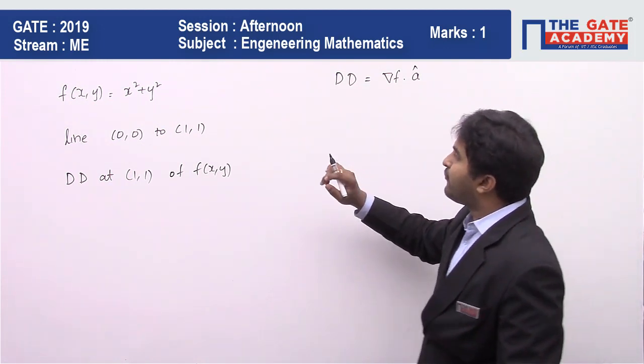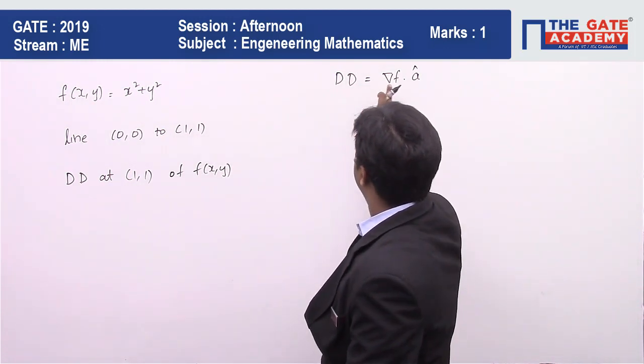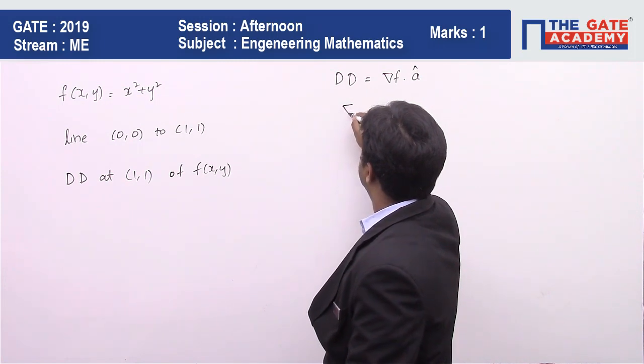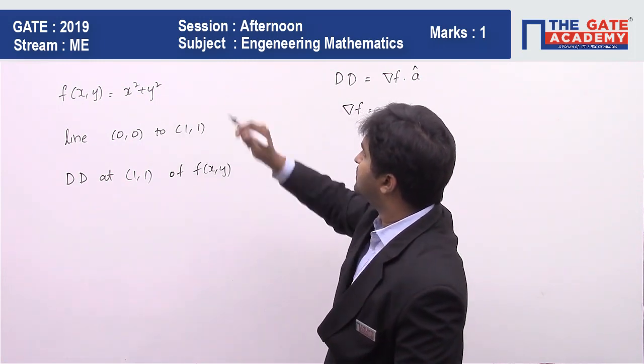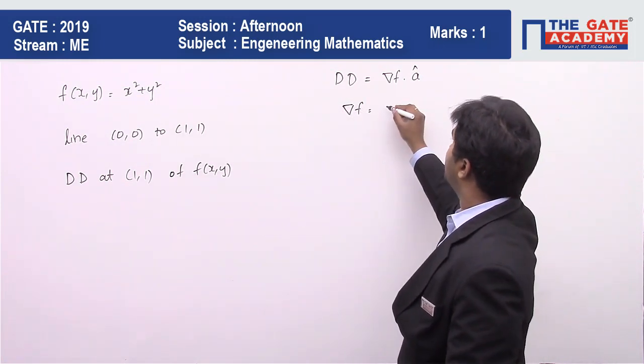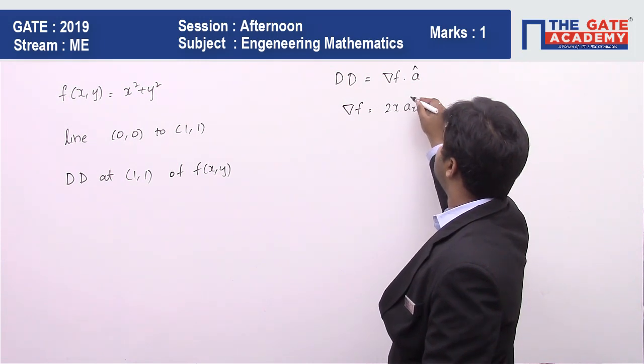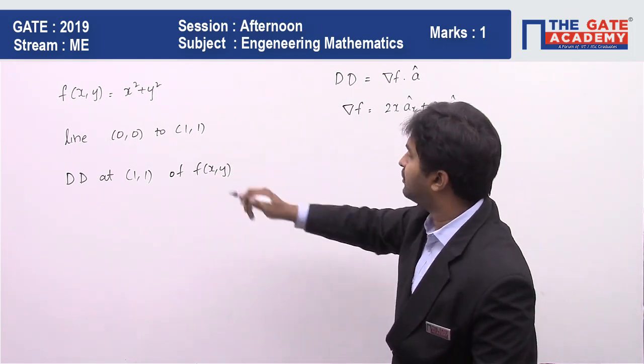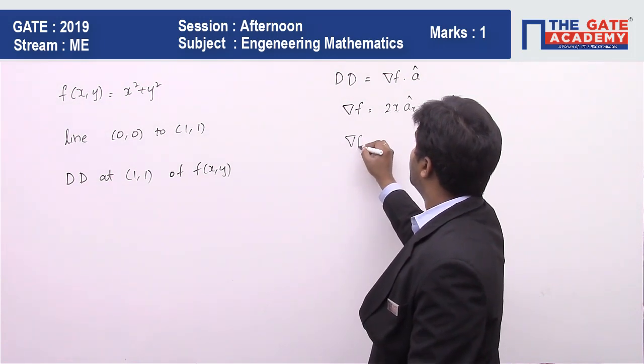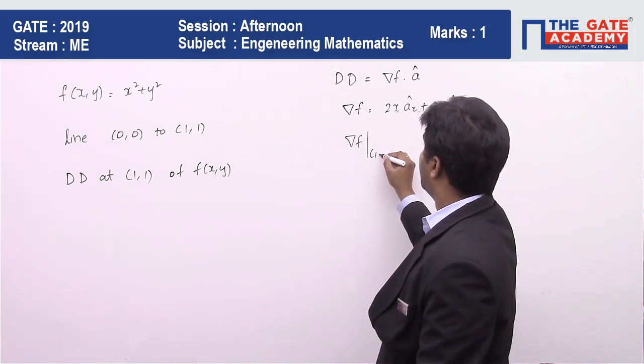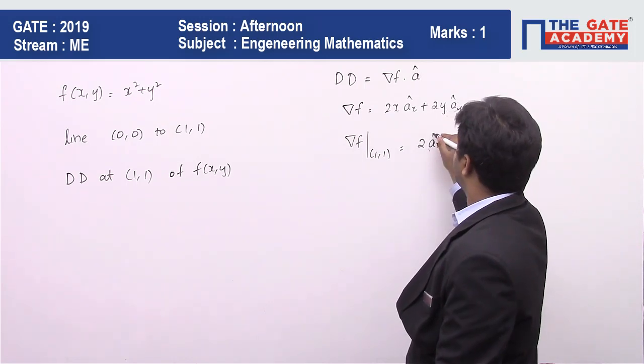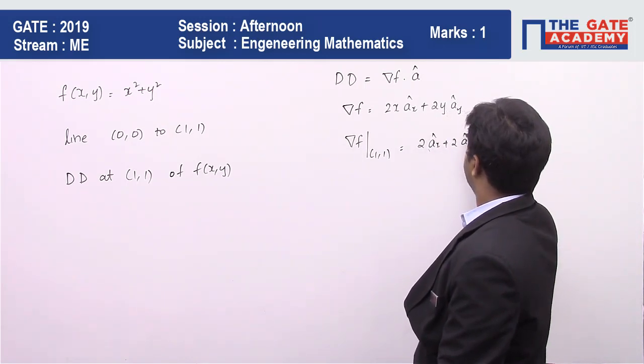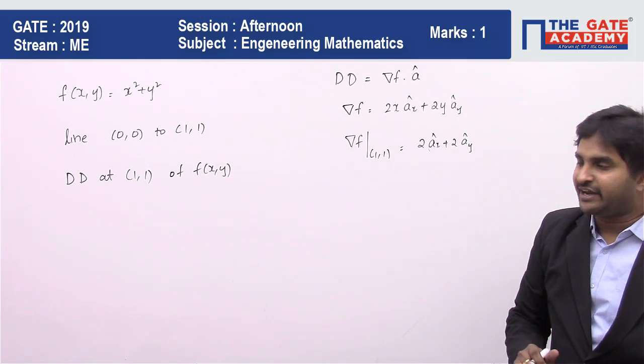So here we want the gradient. First of all, we need to find the gradient. Now what is the gradient of this function? The gradient is 2x in the x direction plus 2y in the y direction. And we are finding it at the point (1,1), so it is 2ax + 2ay. So we found out the gradient.